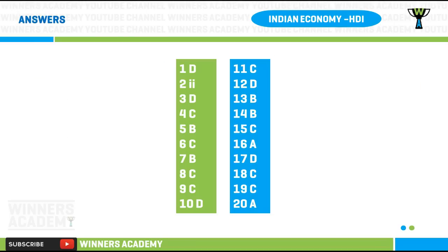All answers for these 20 multiple choice questions have been provided. Try to answer them without looking at the answers first. Anyone who has watched Indian Economy Lesson 2 Part 4 will definitely score at least 80 to 90 percent on the first attempt. The answers are also included so you can archive them for your Group 1 exam preparation.